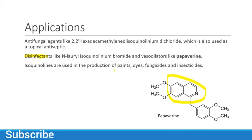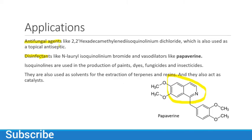Isoquinoline-containing compounds are also used in dyes, fungicides, and insecticides, and are present in antifungal agents. They are also used as solvents for the extraction of terpenes and resins, which are naturally present in different plants. If you want to extract terpenes or resins from plant parts such as stems, leaves, or flowers, isoquinoline can act as a catalyst in the extraction process.